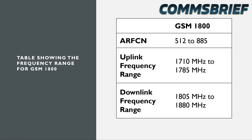Now let's have a look at this table for GSM 1800, where the uplink ranges from 1710 to 1785 MHz. Then there's a gap, and then the downlink ranges from 1805 to 1880 MHz.